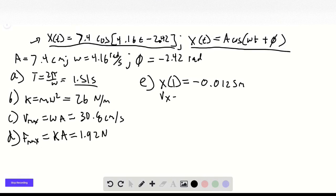Vx equals negative omega a times the sine of omega t plus our phase shift. If we just plug in all these known quantities, we get 30.4 centimeters per second.